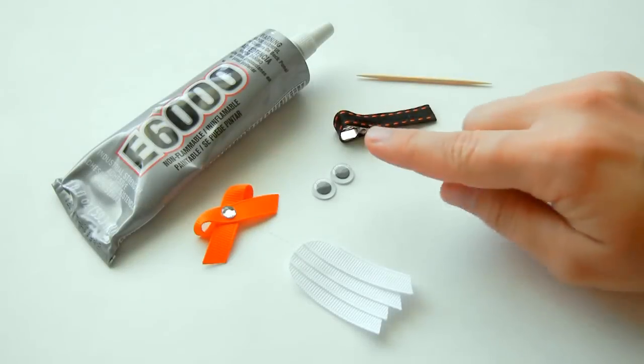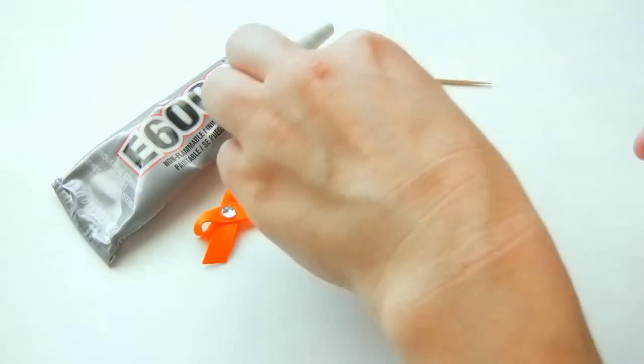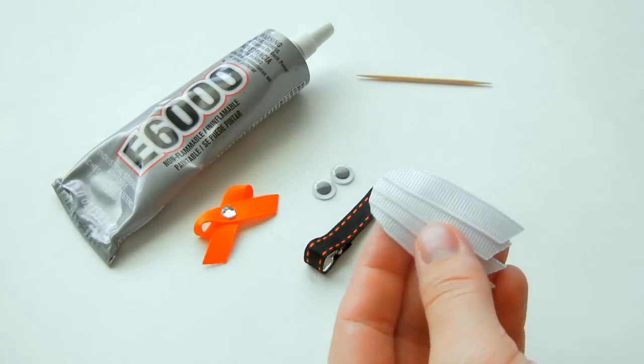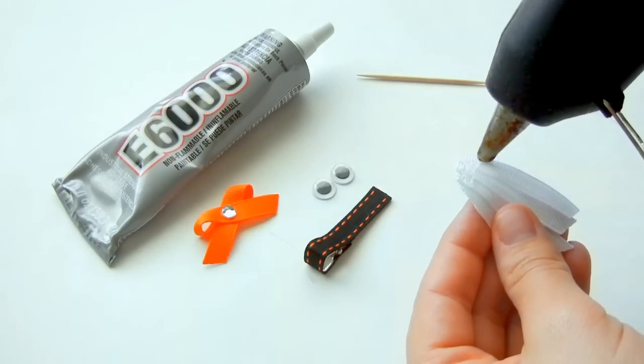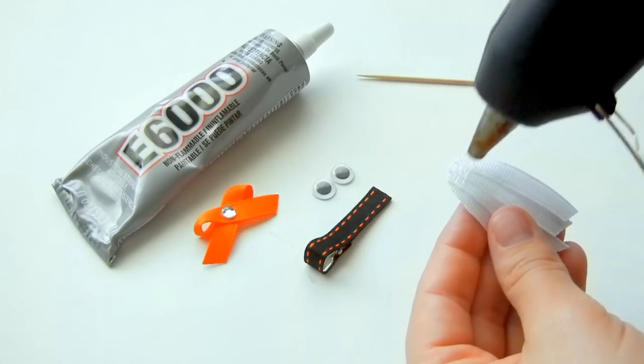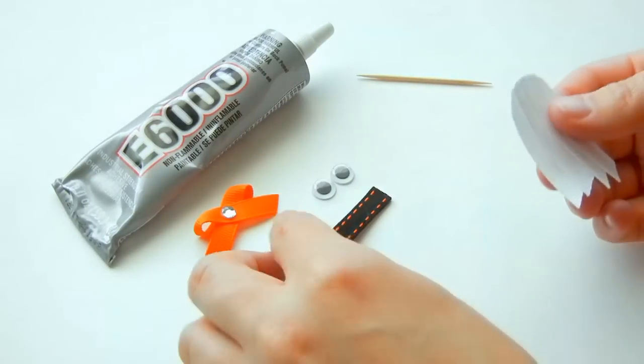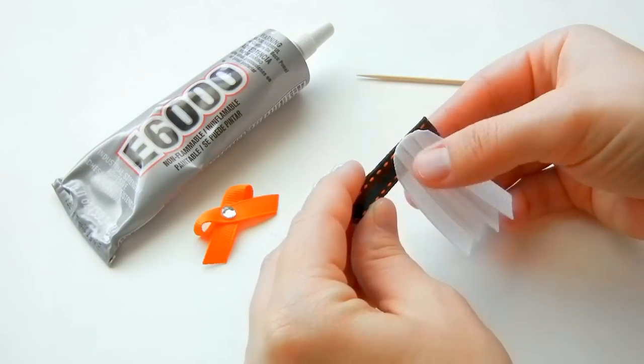Now we're going to put our pieces together, so make sure that you have your googly eyes and your lined clip. Take your ghost body and your lined clip. Turn your ghost body over and then just add some glue to the top of the head and place it on your clip.